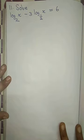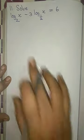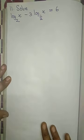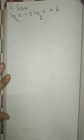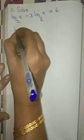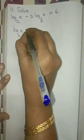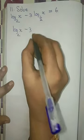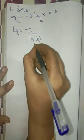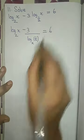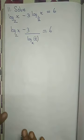Question number 11: solve log x to the base 2 minus 3 log x to the base 1/2, equal to 6. Solve means we have to find the value for x. I can write it as log x to the base 2 minus 3, and using the change of base rule, write it as log 1/2 to the base x, equal to 6.